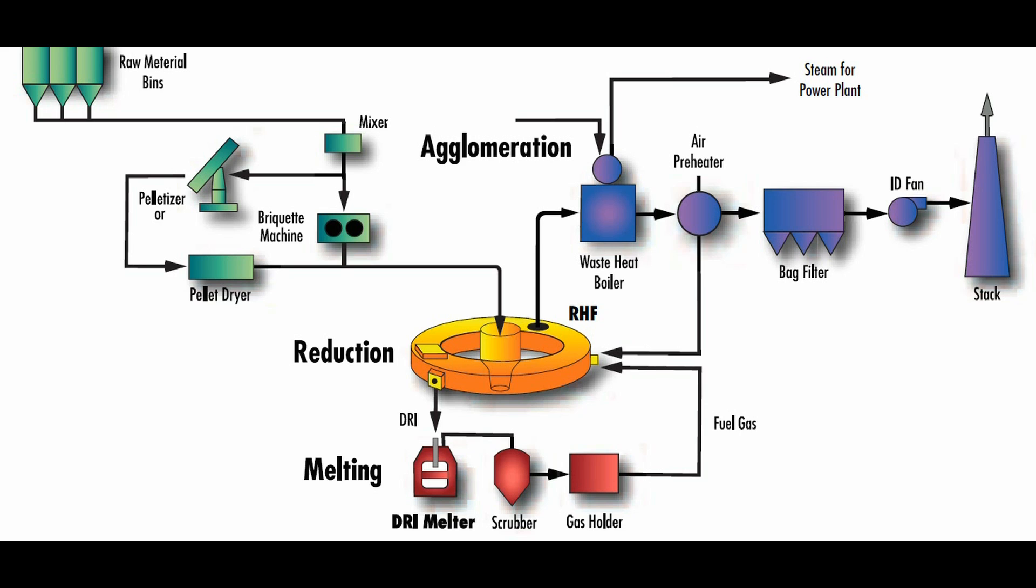The most energy-efficient use is to feed the molten hot metal directly into an electric arc furnace or basic oxygen furnace for producing steel.